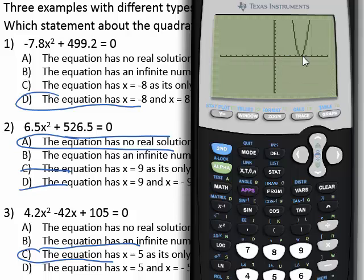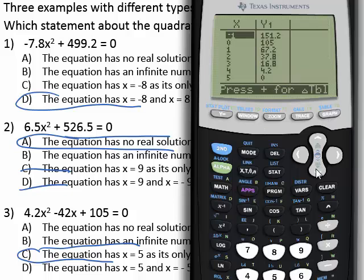And it looks like the graph dips down and touches the axis at just one point. And that point right there is at 5. So we can check that on a table. And verify that 5 does give us a value of 0.